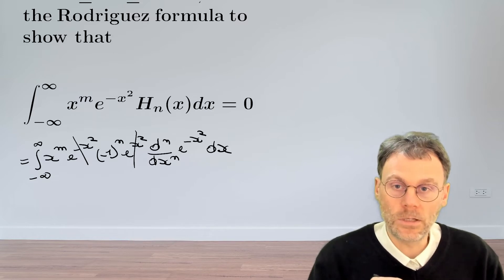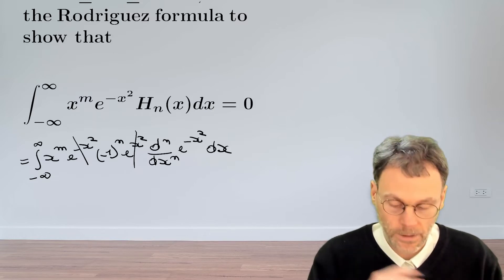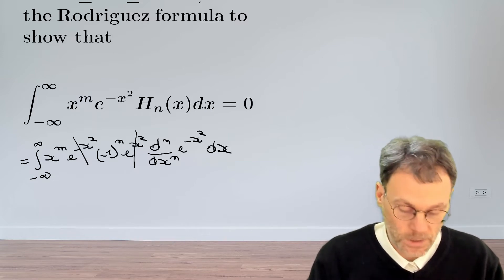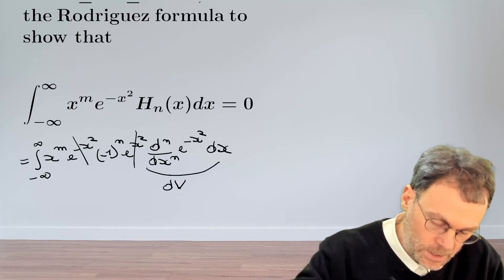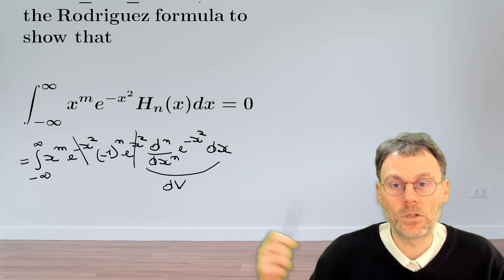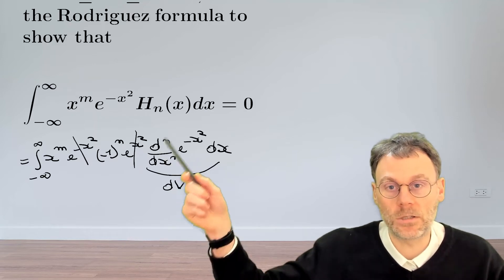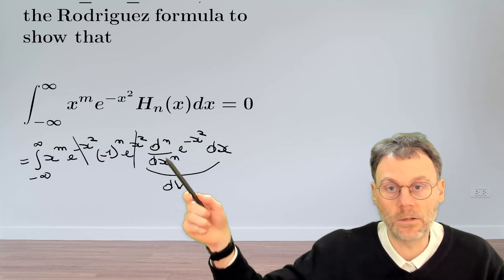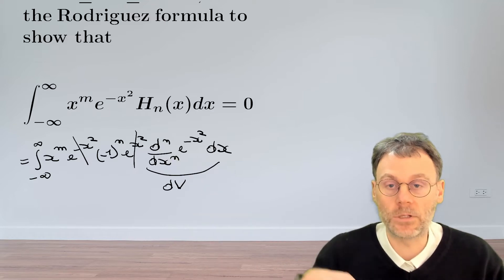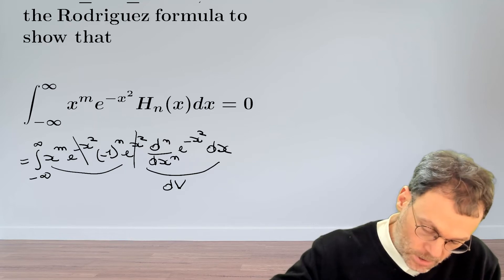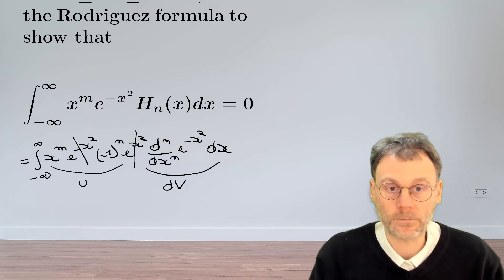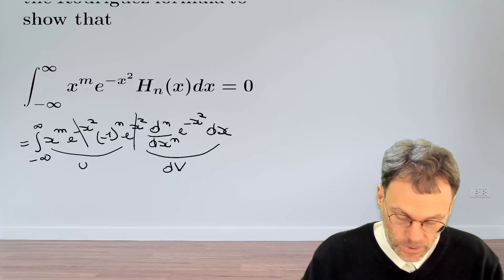Let's use integration by parts u and dv. What is u and what is dv? Obviously it makes sense to pick this here for dv, because we know what v is, it's just integrating this thing, which will be taking the derivative not n times, but n minus 1 times. So that's pretty easy. And then the other part is going to be u.